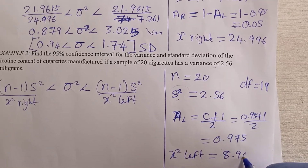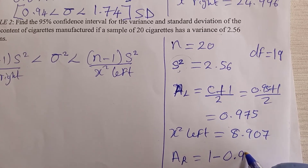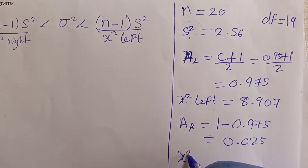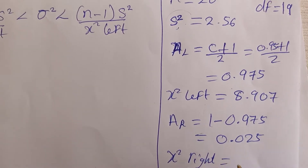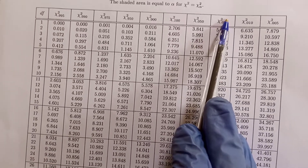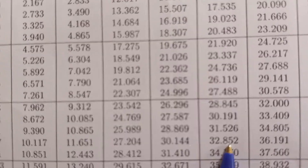To get chi-right, we need the area to the right: 1 minus 0.975 gives 0.025. Looking up chi 0.025 against degree of freedom 19 in the chi-square table gives chi-right equals 32.852.